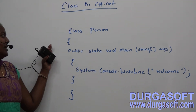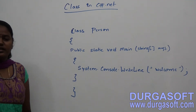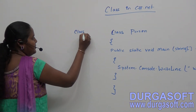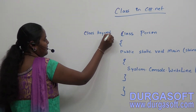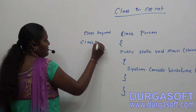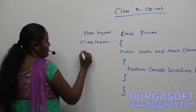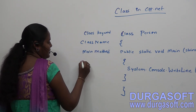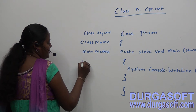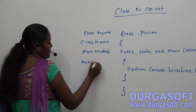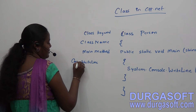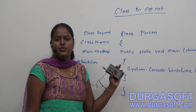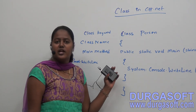Let us see a class in C#.NET. Here we have a class - 'class' is a keyword. What are the components we are going to have? We are having a class keyword, a class name, a main method, and Console.WriteLine.